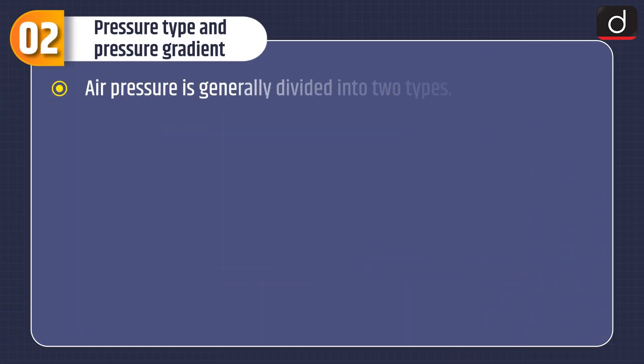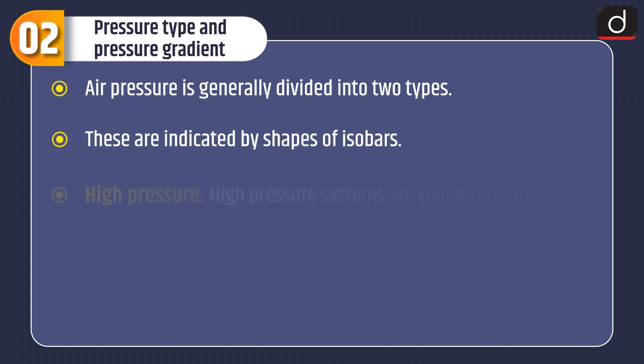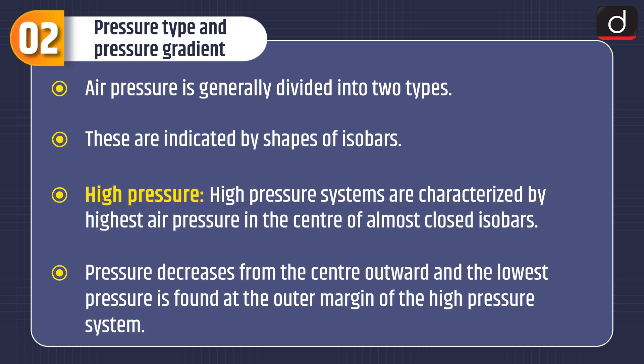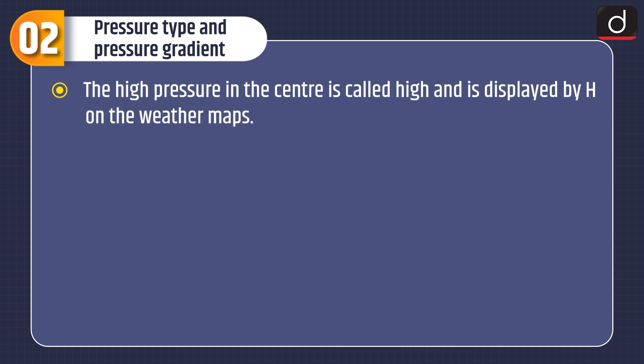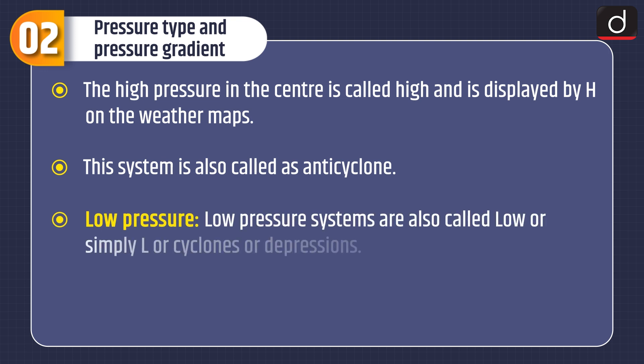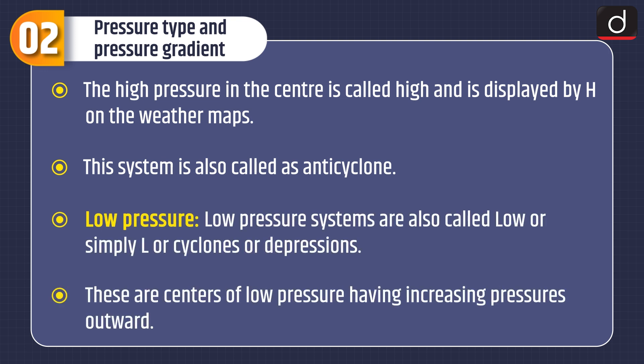Now let's discuss about pressure type and pressure gradient. Air pressure is generally divided into two types, indicated by shapes of isobars. High pressure systems are characterized by highest air pressure in the center of almost closed isobars. Pressure decreases from the center outward and the lowest pressure is found at the outer margin. The high pressure in the center is called high and is displayed by H on weather maps. This system is also called an anti-cyclone.